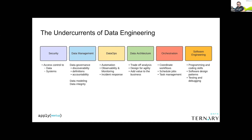DataOps is another big undercurrent. Observability is the big buzzword of 2020, 2021, and 2022. Automation, observability, monitoring, and incident response are basically the principles of DevOps applied to data. The other big trend is seeing the principles of software engineering and DevOps being applied to data — whether that's machine learning or data engineering — which is awesome because it represents the maturity of where the industry is going.